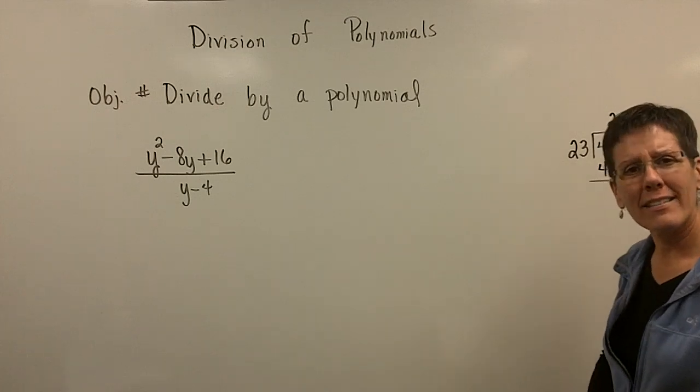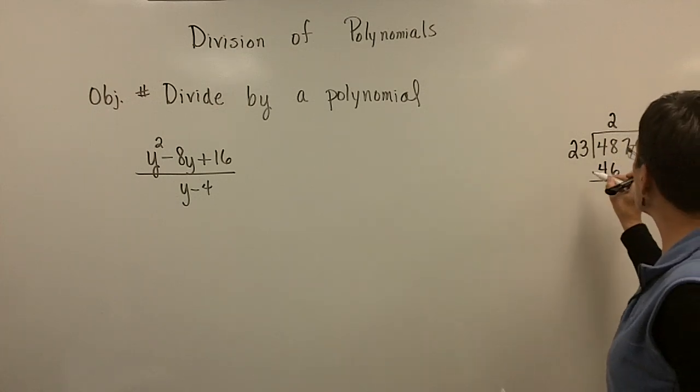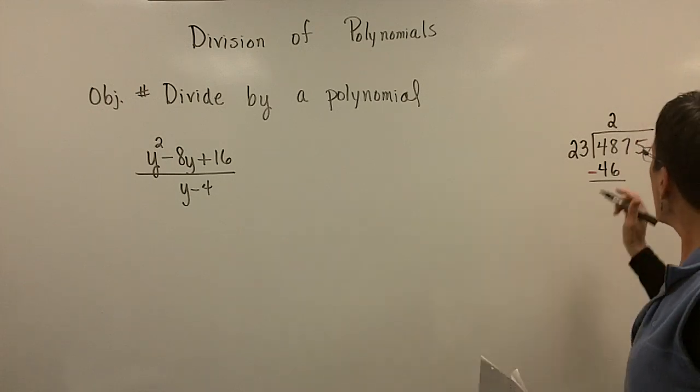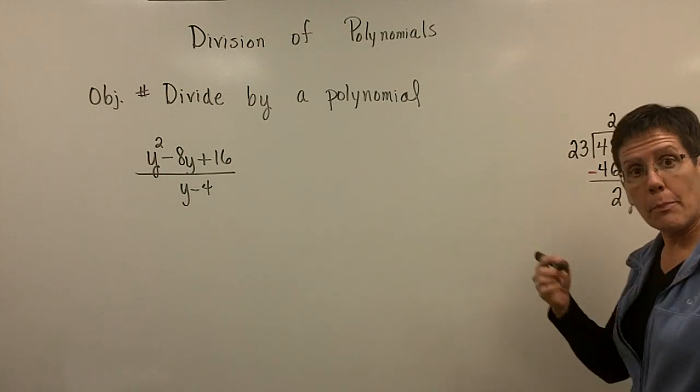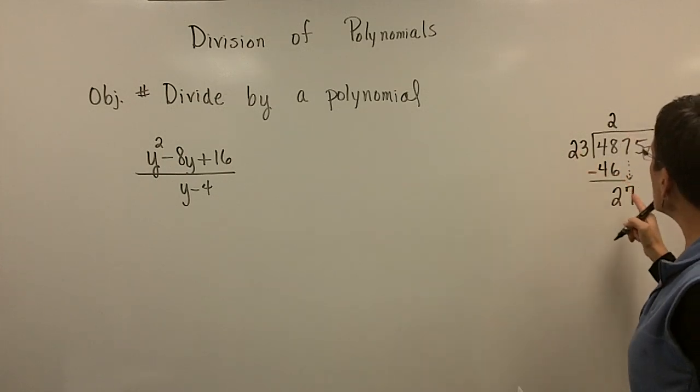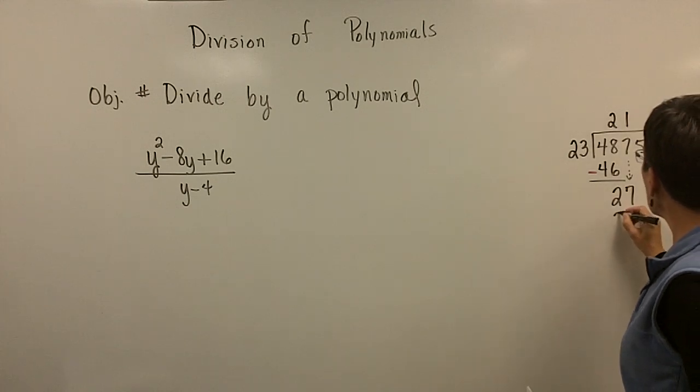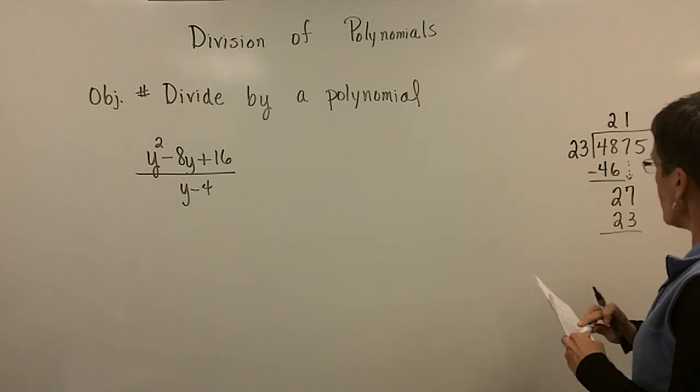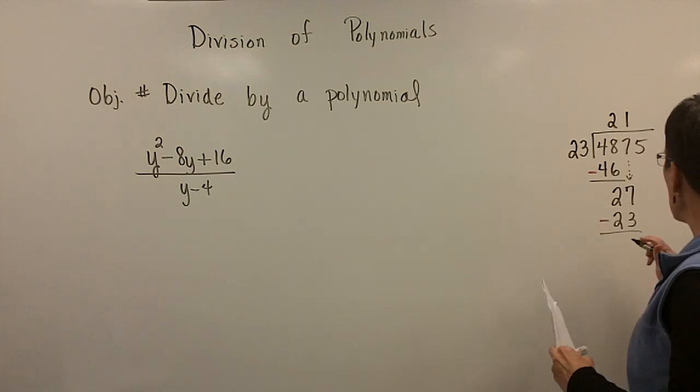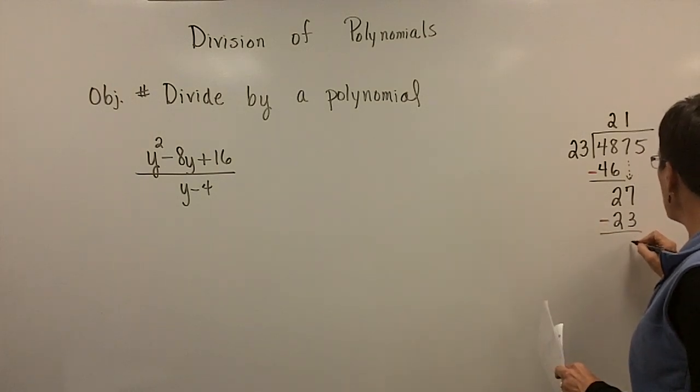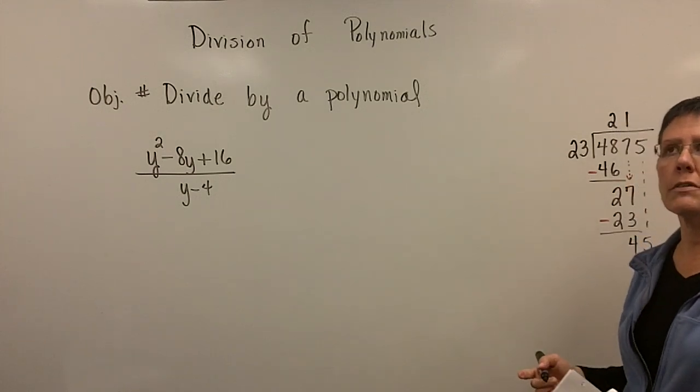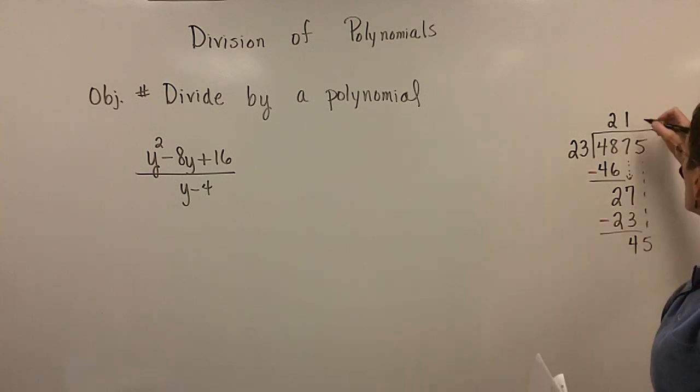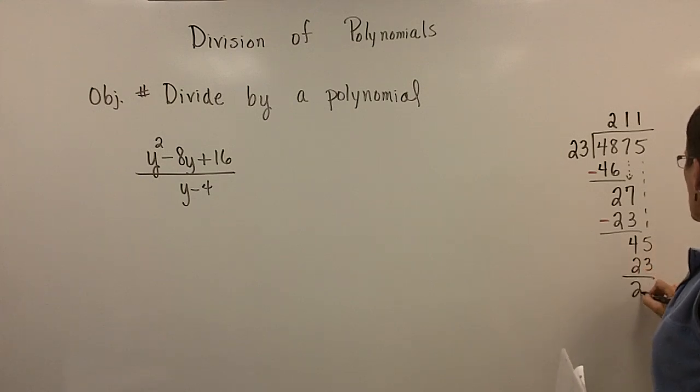Because we knew 23 times 2 was 46. And what did you do next? Yeah, you subtracted. So you took 48 and subtracted 46. And that's a 2. And then our next step was to bring down the 7 and do that process over again. So 23 goes into 27 one time. And I'm going to bring that 1 times 23 down and I'm going to subtract. And I'm going to get a 4 here. And then I'm going to bring down this 5 and I ask myself again, does 23 go into 45? Well, twice would be 46. So it's only going to go into there once.